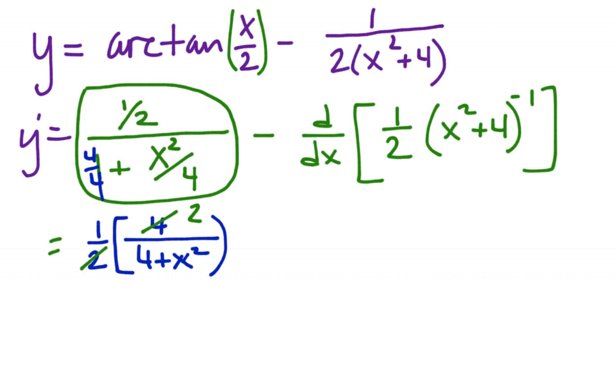And then I do the derivative of this—I get the chain rule. Minus—well, the negative 1 comes out times the 1 half—negative 1 half.